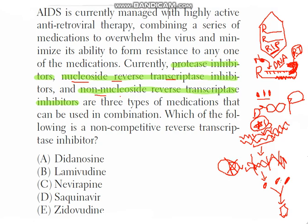Nucleoside reverse transcriptase inhibitors mimic the human nucleotide. Normally in the human body, nucleotides have a hydroxyl group, which helps in the binding of a second nucleotide to the first. But these medications look like nucleotides but do not have a hydroxyl group. Without the hydroxyl group, there is no further attachment of new nucleotides and no formation of DNA. These medications attach to the reverse transcriptase enzyme and inhibit it.